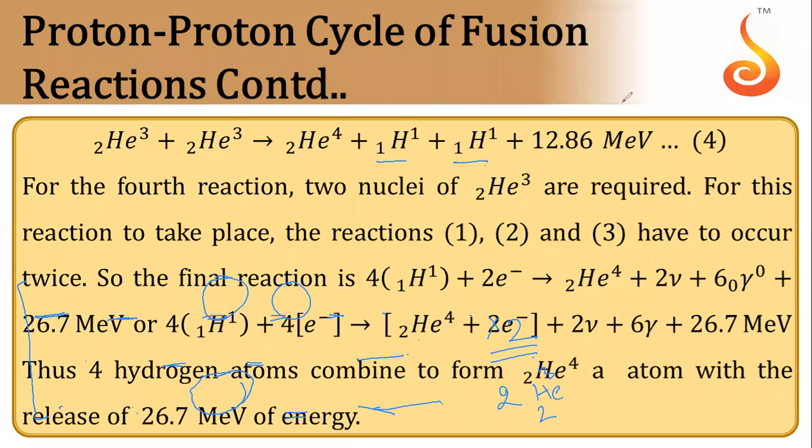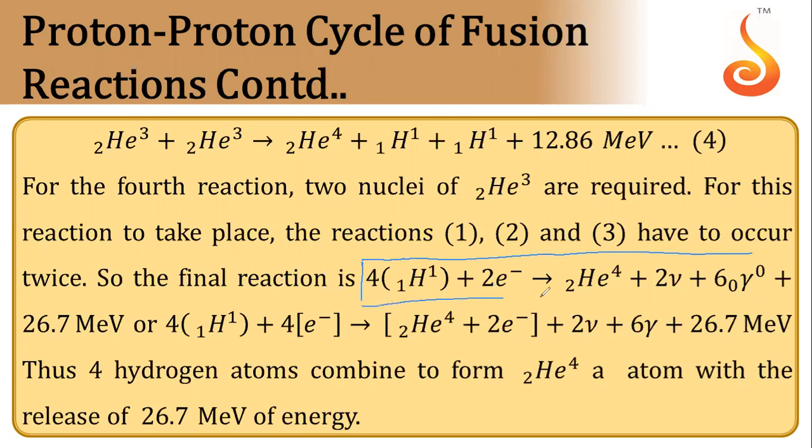When you add all these reactions, the final reaction will come as this one: four hydrogen nuclei plus two electrons will combine to form a helium nuclei plus two neutrinos and six gamma radiation, plus 26.7 MeV energy will be released.